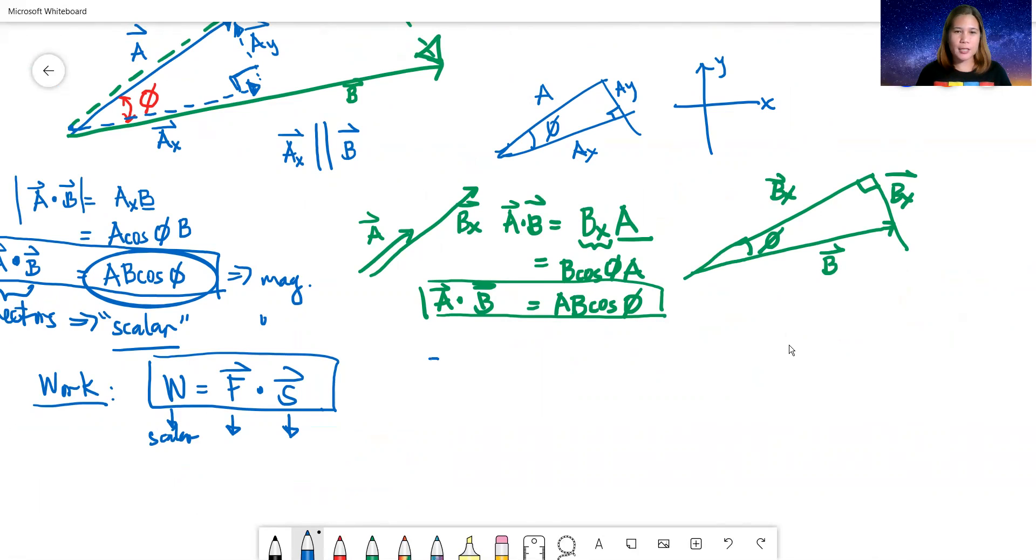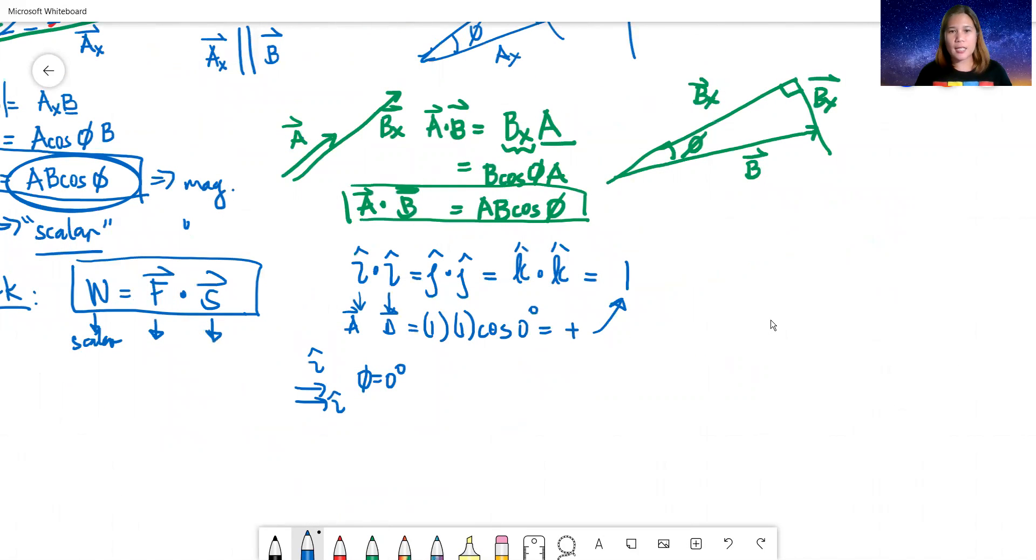If we say unit vectors, we say that i-hat dot i-hat equals j-hat dot j-hat equals k-hat dot k-hat. These are all equal to 1. Let's check. If i-hat dot i-hat, what's the magnitude of i-hat? It's 1. What's the magnitude of the other i-hat? 1 also. What's the angle between them? i-hat going positive X, another i-hat going positive X. If you do tail to tail, the angle between them is 0 degree. So cosine of 0 is of course positive 1. That's why the answer here is 1, because they are going in the same direction.